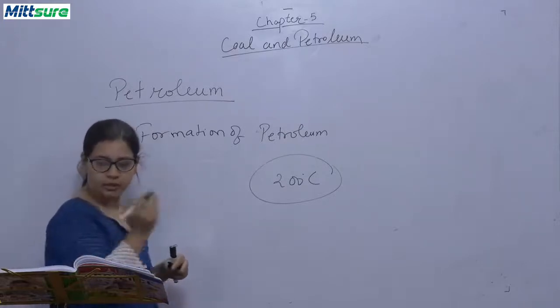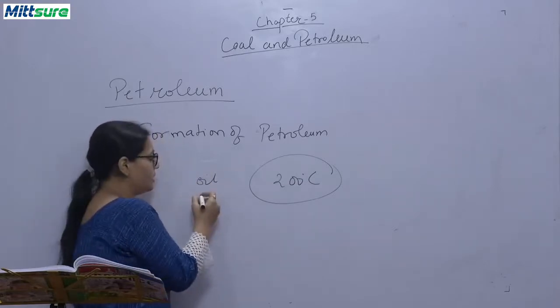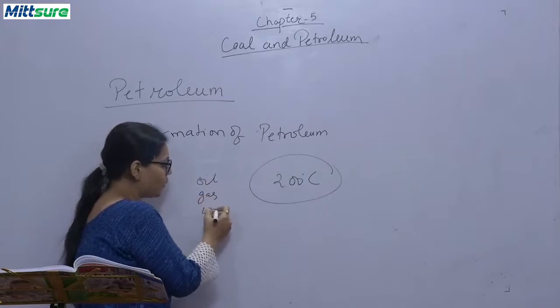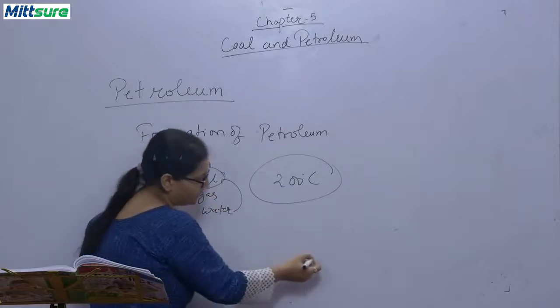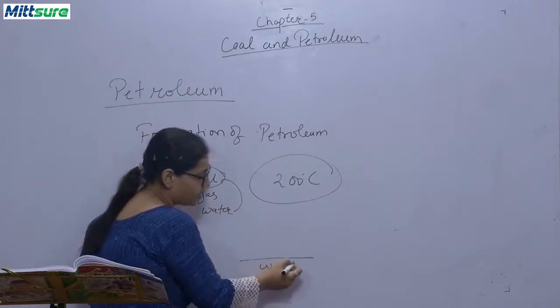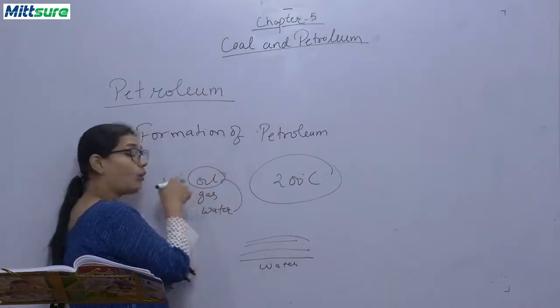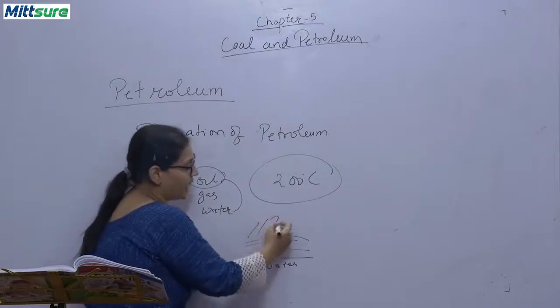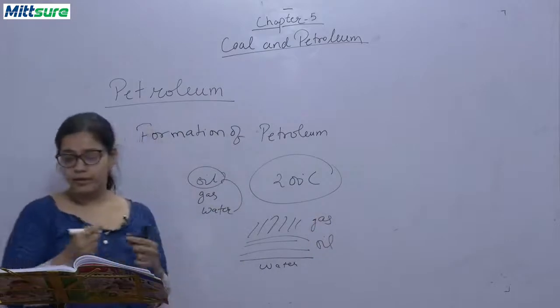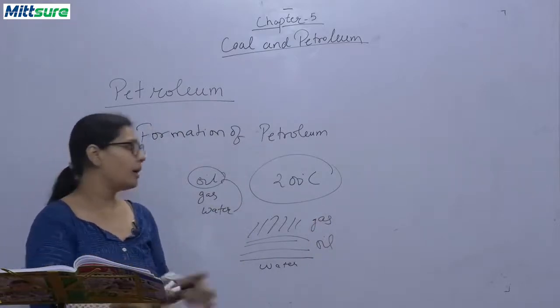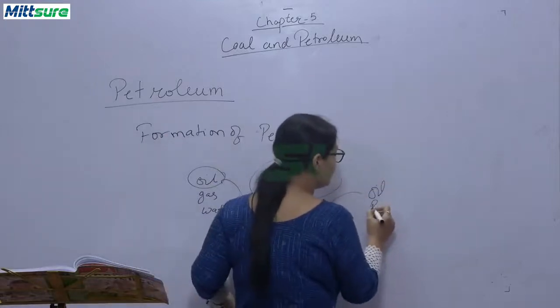This petroleum is found in porous rocks. There are reservoirs. There is oil, there is petroleum, then there is gas, and then there is water. As this oil is lighter than water, there is water. This oil gets deposited here. And as gas is also lighter than oil, here it is gas. And we dig this porous rock and drilled by oil rigs.